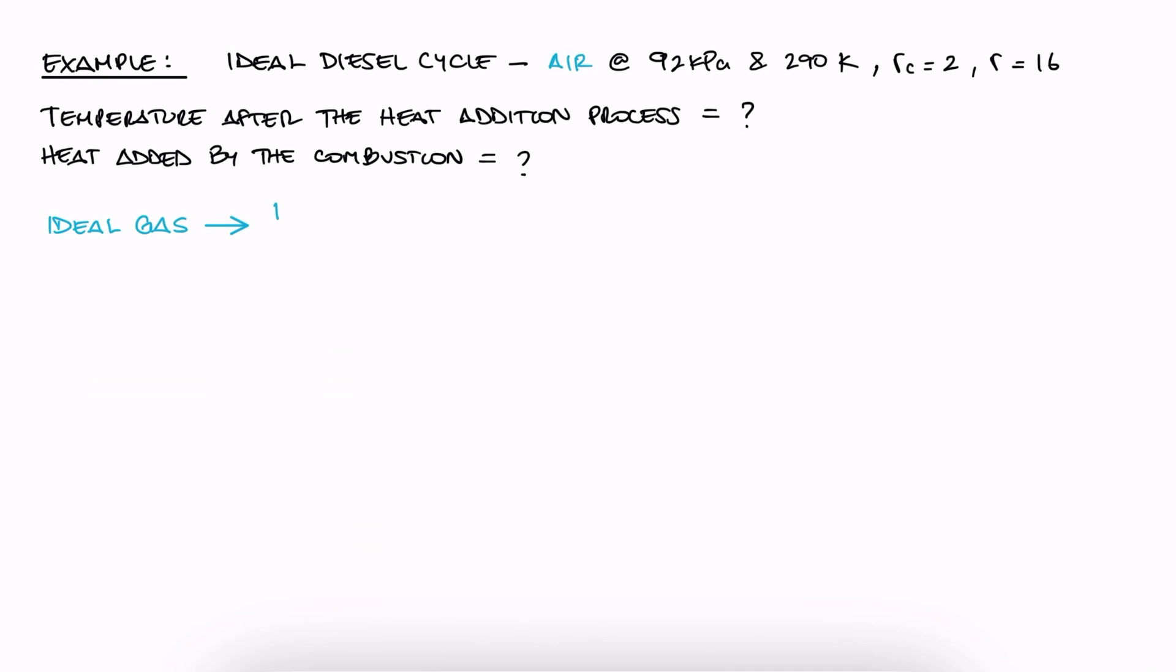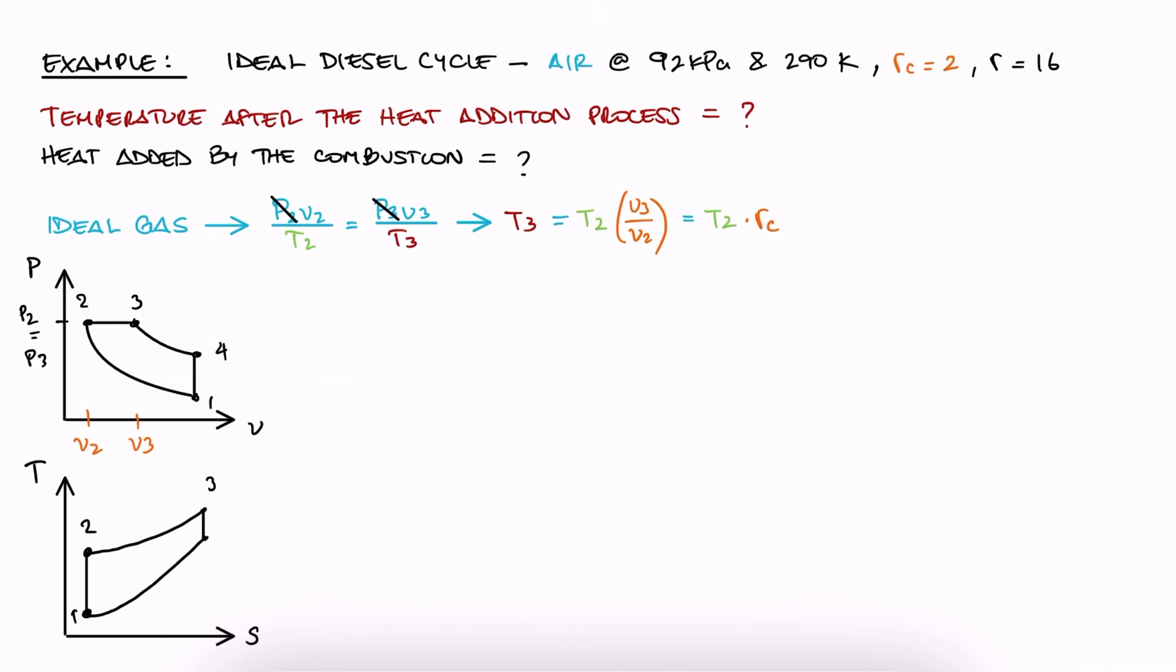Since air is an ideal gas, we can find the relationship between T3 and T2 in terms of V2 and V3 and P2 and P3. And since we learned from this lecture that the heat addition process is isobaric, we see that T3 is only a function of T2 and the cutoff ratio. This means that we can find T3 if we know T2. To find T2, which is the final temperature after an isentropic compression process between 1 and 2, we know that we can use the relative volume values. Since we have the compression ratio, which is V1 over V2, we can use T1 to find Vr1 and this will give us Vr2.